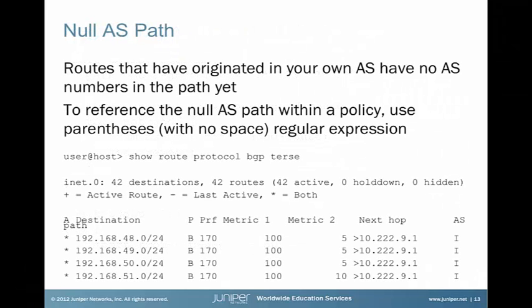Lastly, we have the null ASPath example. To easily find these routes, use 'show route protocol BGP terse'. We see some routes that on the right-hand side have no AS number — just the internal origin code. To reference these routes, you would create a null ASPath regular expression and then reference that inside a routing policy, just as shown on the previous slides.